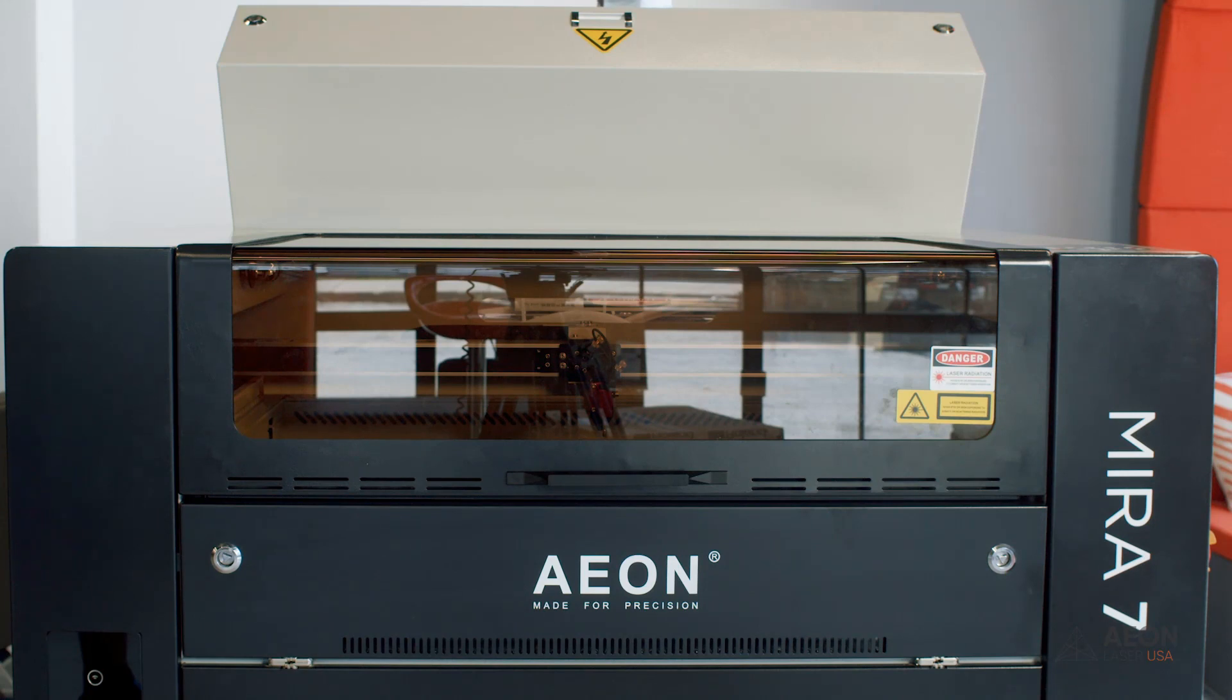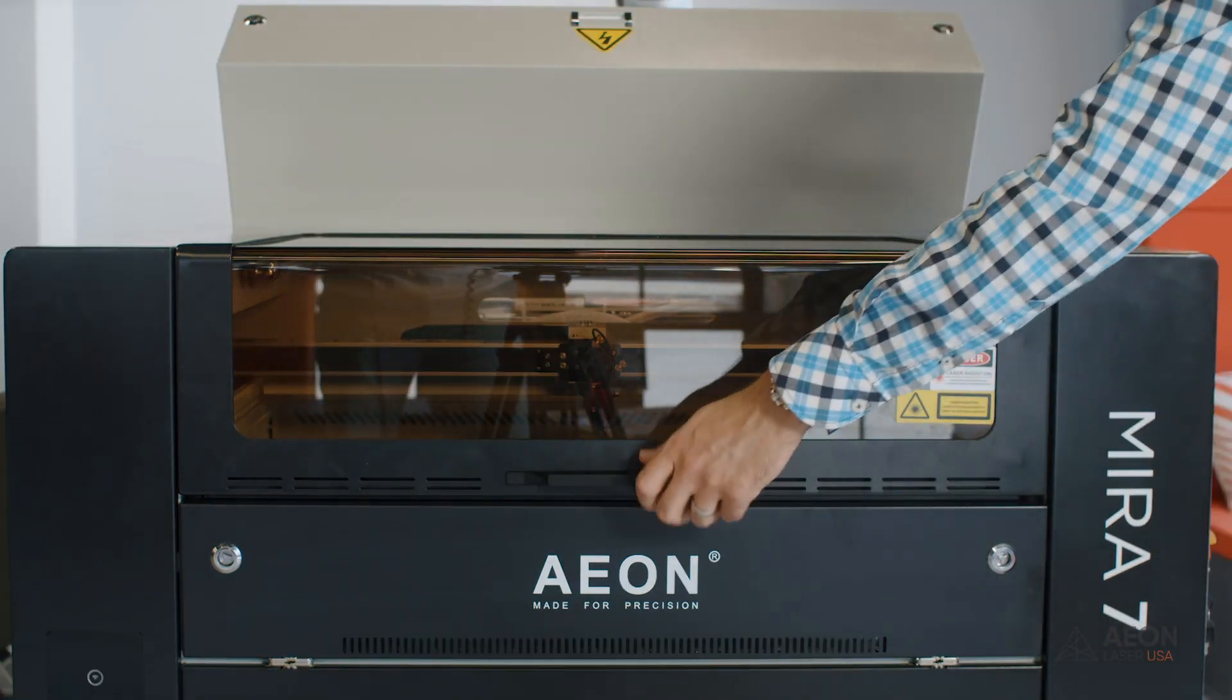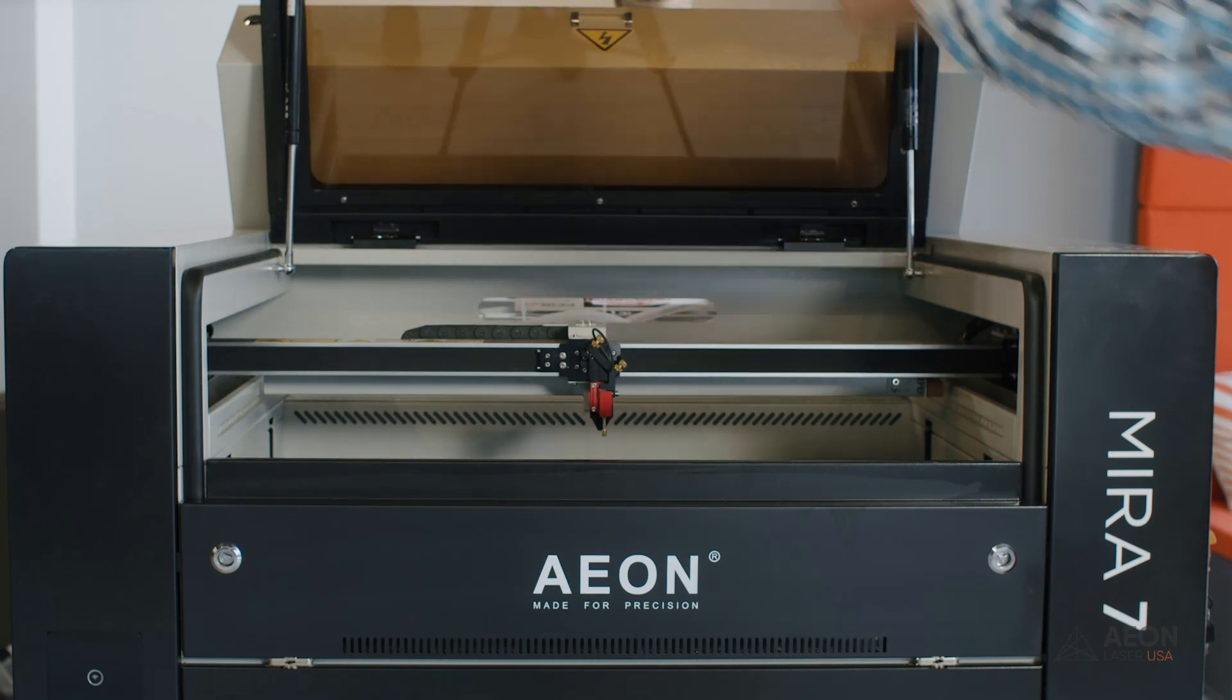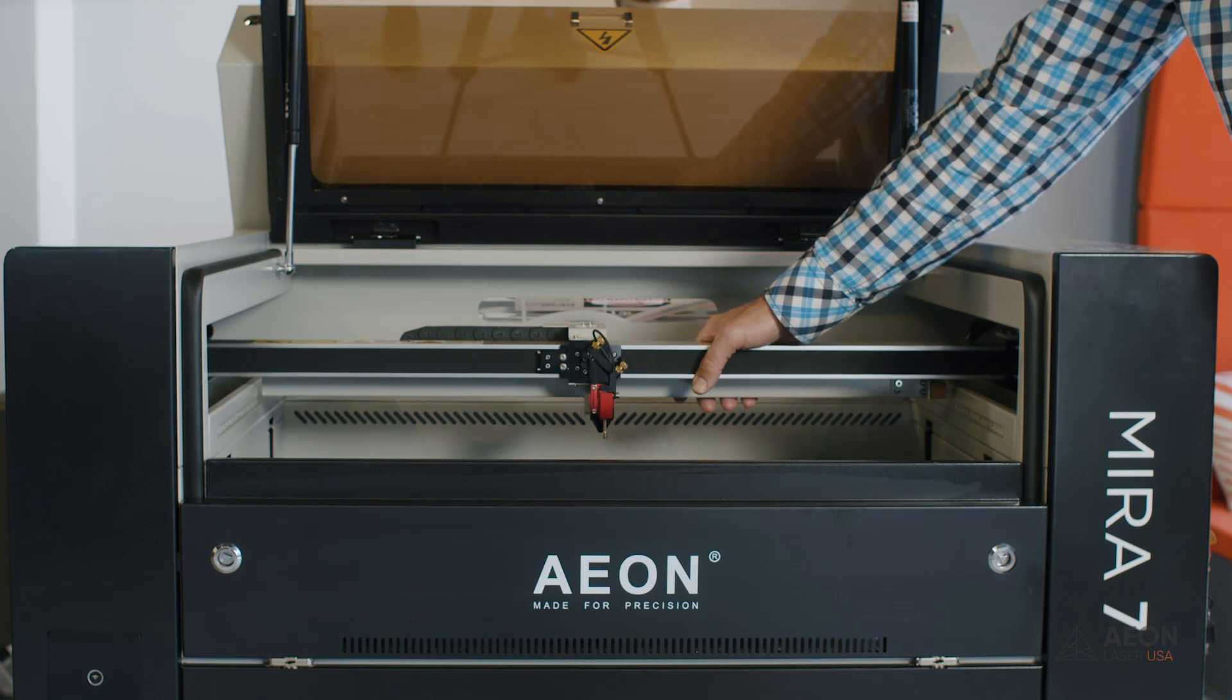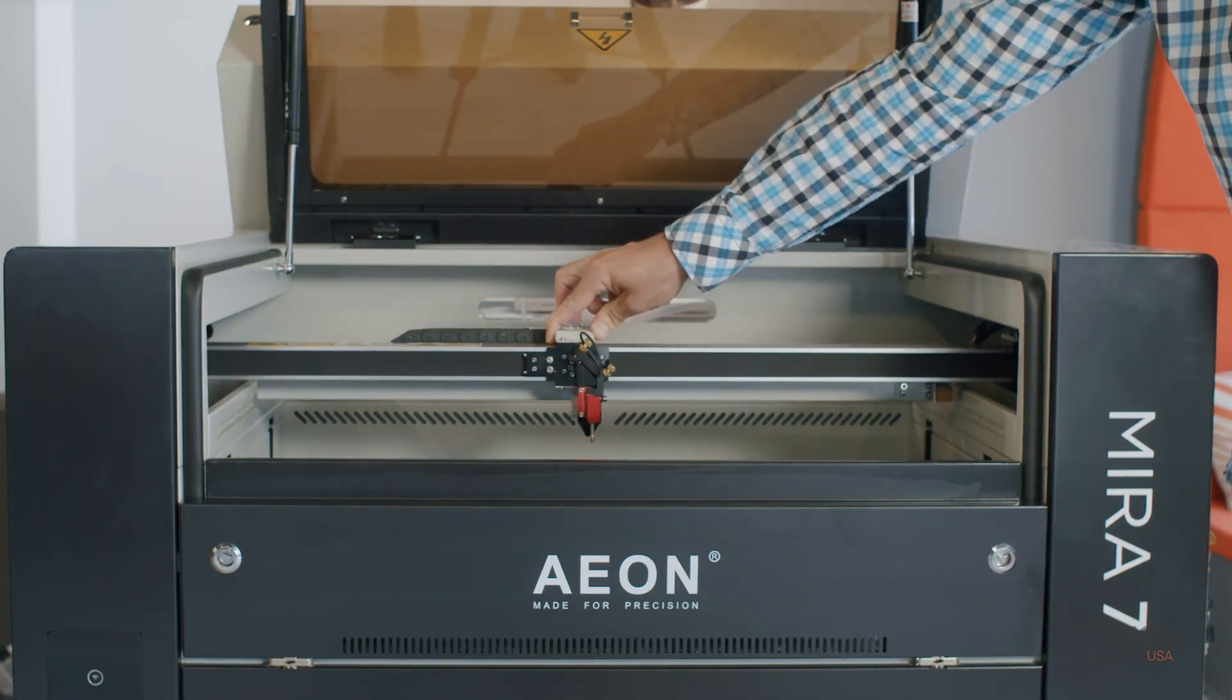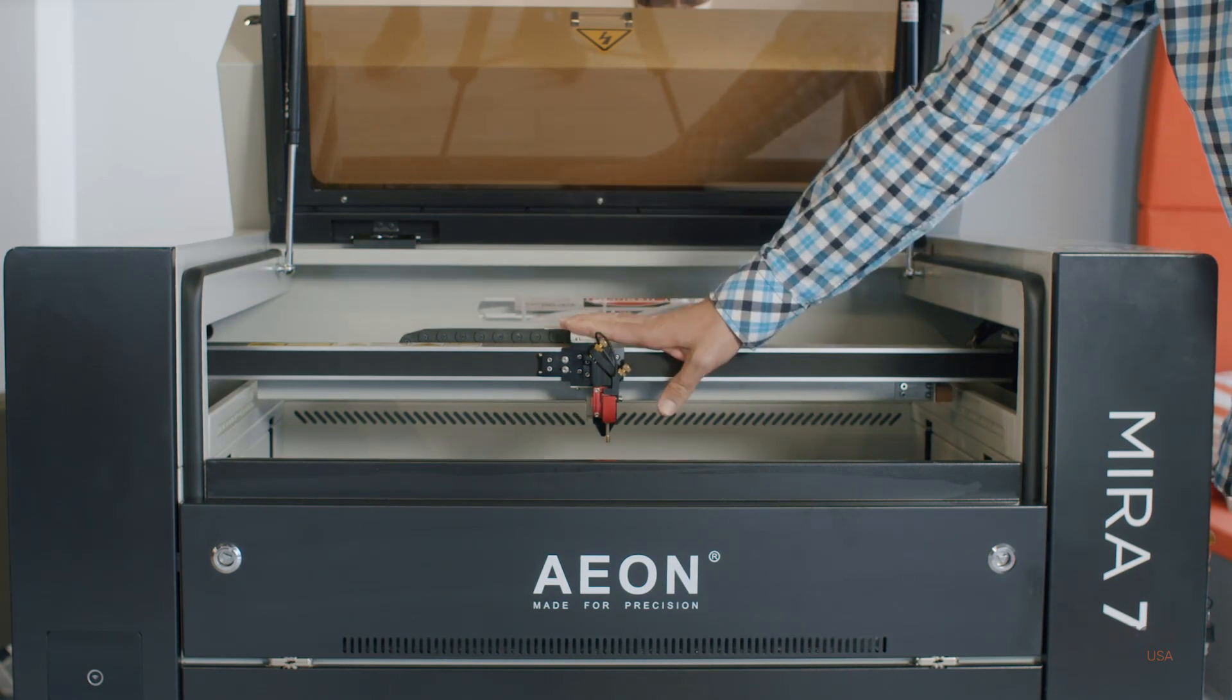So now we're going to power the machine on for the first time. Let's start by opening up the lid so we can get a good view of the gantry and laser head. If it's not already, go ahead and pull it at least so it's in the middle of the machine. Just know that when the machine's turned on, you can no longer move it manually. But we'll want to start it in the middle.